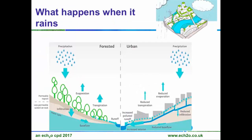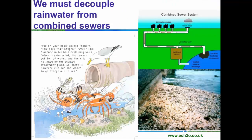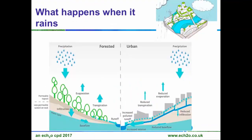What happens when it rains? In a non-urban area, we get evaporation, transpiration from trees, a lot of infiltration, a nice base flow, and only a small amount of runoff. Once we're in a city or town, we get reduced infiltration because of impermeable surfaces, increased and polluted runoff, erosion of our riverbeds, reduced base flow, and reduced transpiration and evaporation. So we want to green the city as much as possible. I know you had someone here this morning talking about green walls and green roofs — I'm hoping they explained why that's so useful.